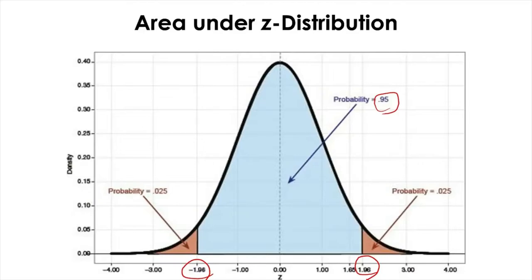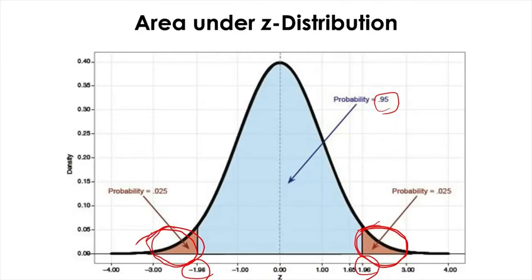The z-score tells you how far a score is from the mean in units of standard deviation. A z-score of 1.96 (or 2 after rounding) means the score is 2 standard deviations above the mean. The sign tells you whether the score is below or above the mean. The total area under a z distribution is 1, which is basically 100%. The remaining area in both tail ends is 2.5% each, because the middle is 95% and the remaining 5% is split symmetrically into two tails.